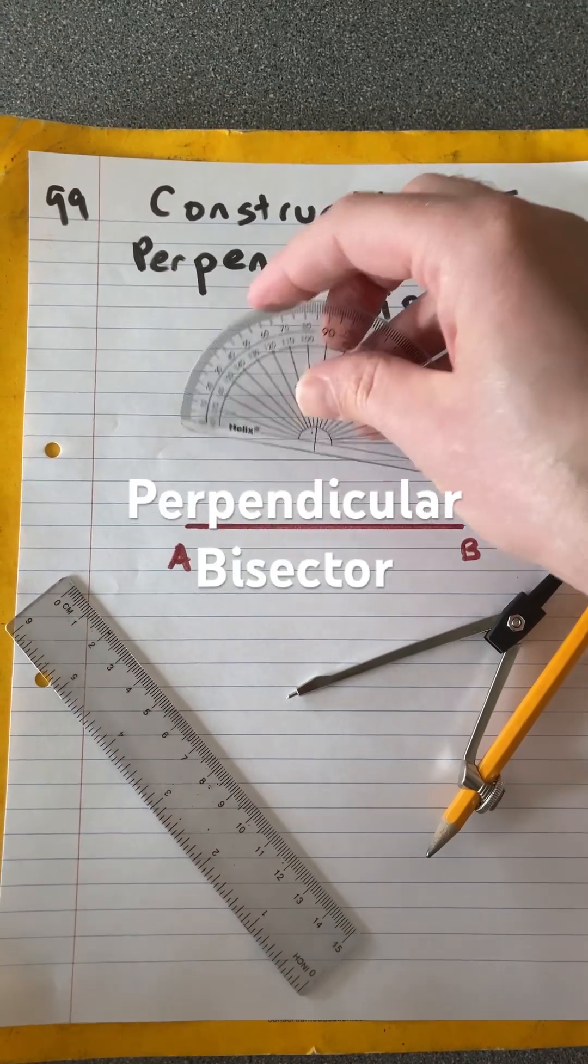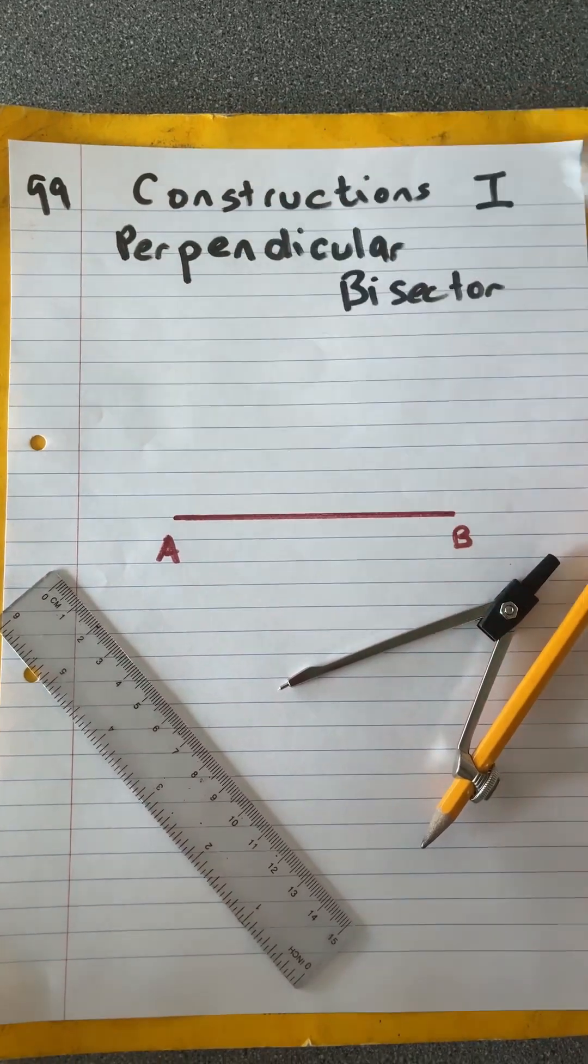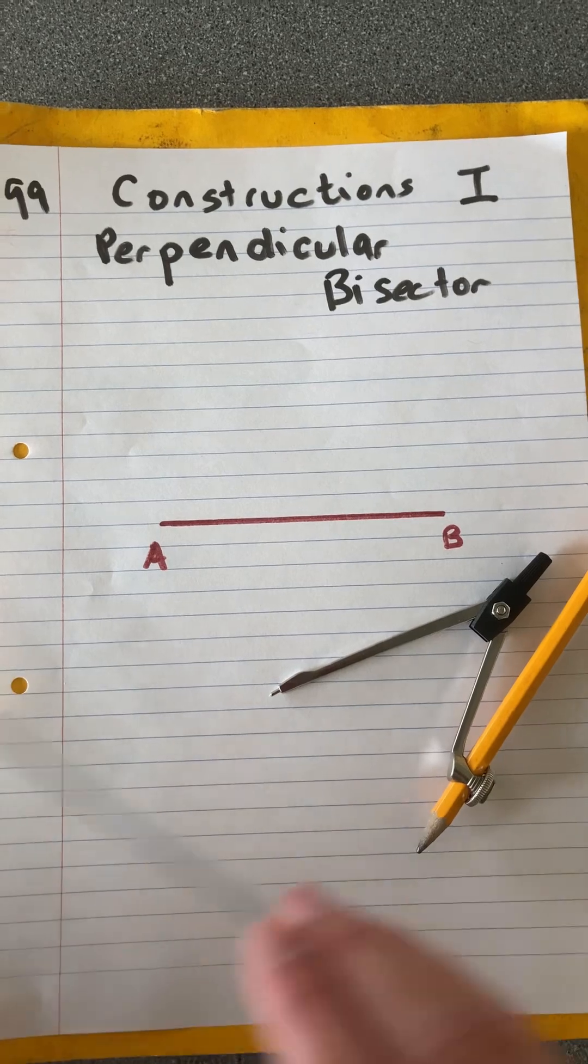To be perpendicular means to be a right angle, and we'll measure that at the end. So we have this straight line AB.